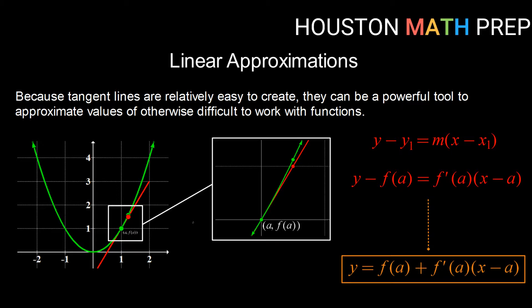We use the process of creating a tangent line to a curve at a point, and then plugging in a value nearby to get an estimate. If we zoom in on where we created our tangent line to our curve, we can see that if we created our tangent line at the point (a, f(a)), then as long as we are fairly close to that point, the difference between the actual function value and the y-value we get by plugging an x-value into our tangent line is very small.